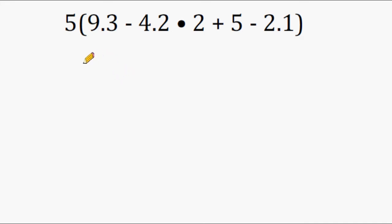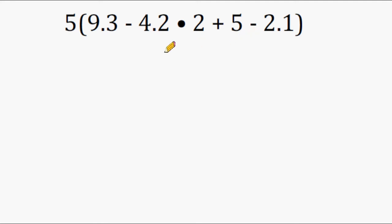In this problem we have a number sitting outside of parentheses. Whenever you see a number sitting outside of parentheses with no sign directly after it, it just indicates multiplication — so we are going to multiply 5 by whatever answer we come up with from inside the parentheses. Looking inside the parentheses we have 4 signs, and we have to figure out which one to do first. Remember, you always have to do all multiplication or division before you even touch addition or subtraction.